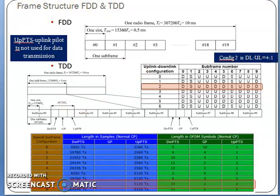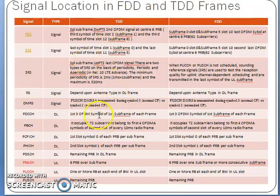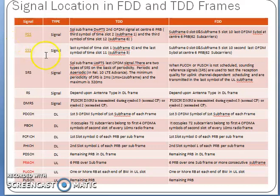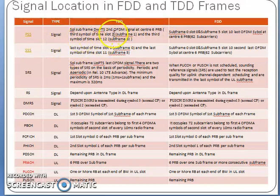This is related to signal location in FDD and TDD frames — which signal is situated where. PSS is the primary synchronization signal and SSS is the secondary synchronization signal. PCI equals PSS plus 3 × SSS. The PSS is located at the center of 6 PRBs, at the third symbol in slot 2. PSS is in time slot 2, subframe 1, and SSS is in slot 1, subframe 0.